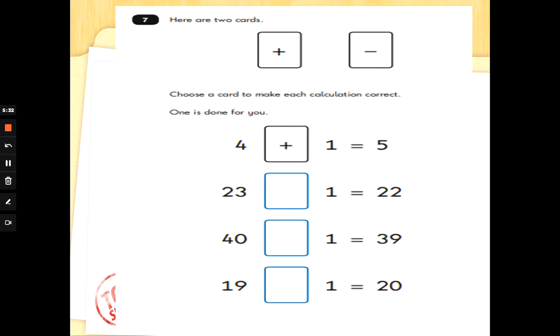Number seven: here are two cards, add and subtract. Choose a card to make each calculation correct. One is done for you. You don't need to do any working out here. You just need to remember that add makes the answer bigger after the equal sign, and subtraction makes the answer smaller.